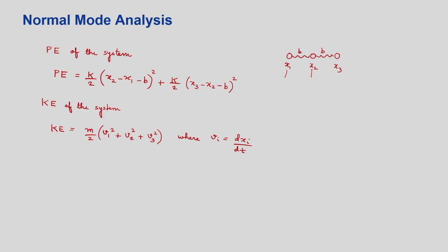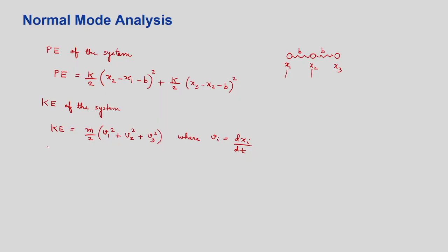Can we define a relative, dimensionless displacement quantity rather than subtracting two distances? I will write the distance from equilibrium position as ηi = xi − xi0. So η1 = x1 − x10, where x10 is the equilibrium position and x1 is the instantaneous distance. Similarly, η2 = x2 − x20 and η3 = x3 − x30.